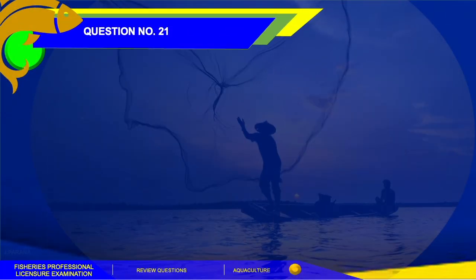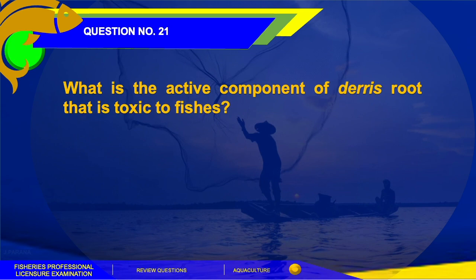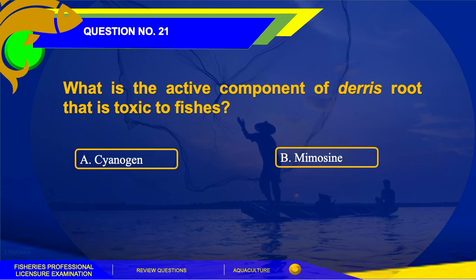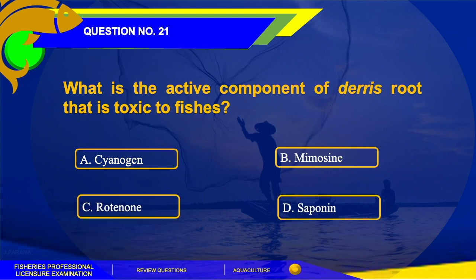Number 21. What is the active component of derris root that is toxic to fishes? The options are: A. Cyanogen, B. Mimosine, C. Rotenone, or D. Saponin.